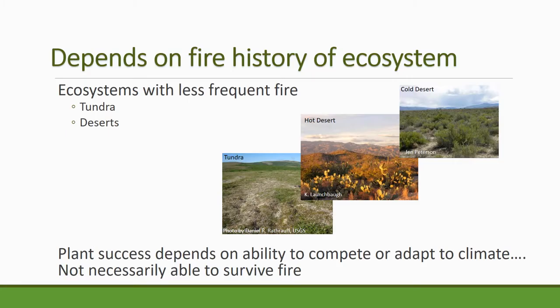First of all, in order to understand the effect of fire on ecosystems you have to think about the ecological history of the community. Some communities have less frequent fire than others. Tundras and deserts don't have the biomass to really support frequent fires — tundra especially lacks the climate, with shorter growing seasons and colder temperatures. The cold desert in Idaho features shrubs with lots of space between them, not much biomass to carry fire, so fires are fairly infrequent there.